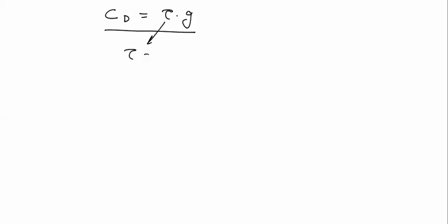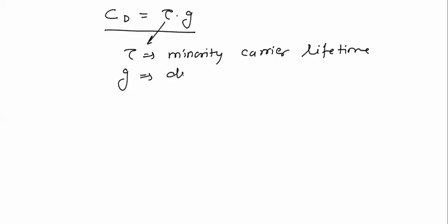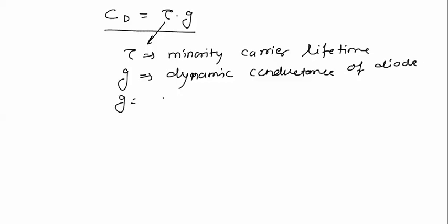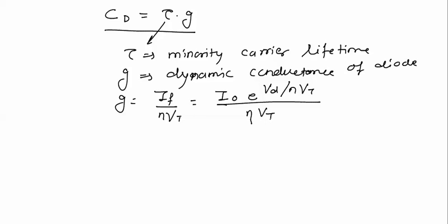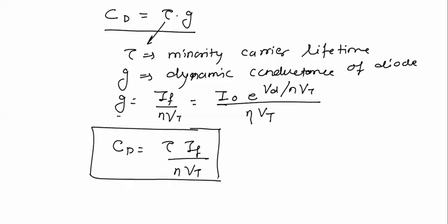In the formula Cd = τ × G, τ is called the Minority Carrier Lifetime, and G is called the Dynamic Conductance of the Diode, which will be studied later. The Dynamic Conductance of the Diode is given by G = IF / Vt = I0 × e^(Vd/Vt) / Vt. Substituting into the formula, Cd = τ × IF / Vt. This is the expression for Diffusion Capacitance.